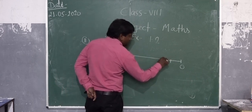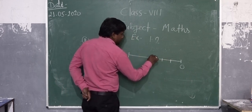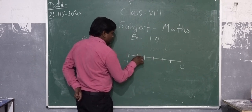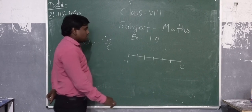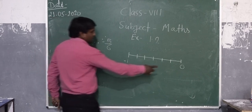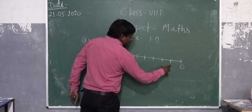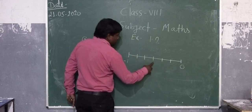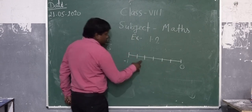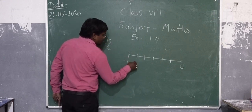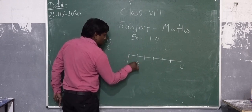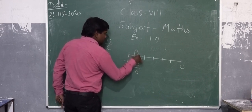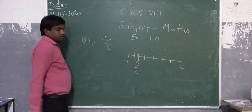This is the first part, second, third, fourth, fifth, and this one is the sixth part. We start from here. This is minus 1 by 6, minus 2 by 6, minus 3 by 6, minus 4 by 6, and this one is minus 5 by 6. So this is where we present minus 5 by 6.